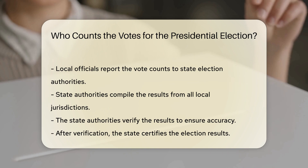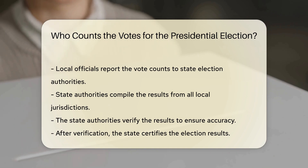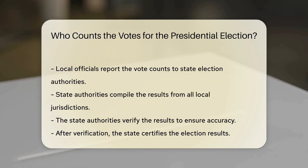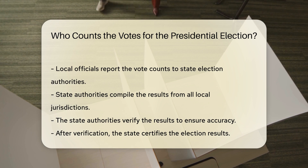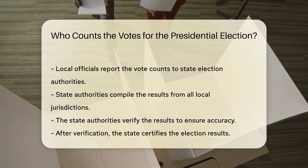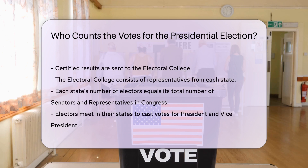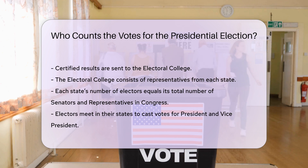The certified results are then sent to the Electoral College. The Electoral College is a group of representatives from each state. The number of electors each state has is equal to its total number of senators and representatives in Congress. The electors meet in their respective states to cast their votes for president and vice president.